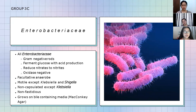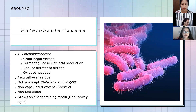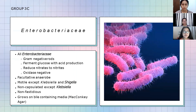They are non-capsulated except Klebsiella. They are also non-fastidious and can grow on MacConkey agar, which contains bile. Most bacteria under this family are commensals of the gastrointestinal tract and can be acquired through the fecal-oral route, poor sanitation, and colonization of the skin and respiratory tract.